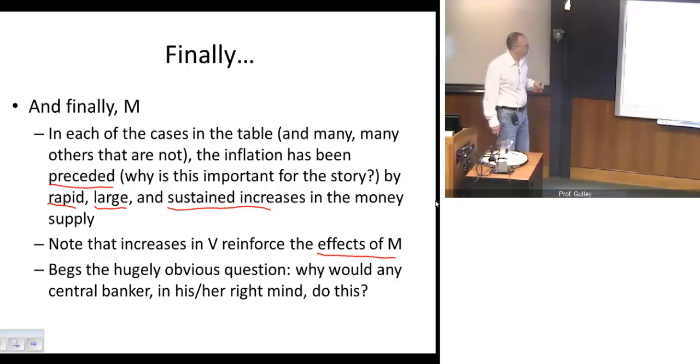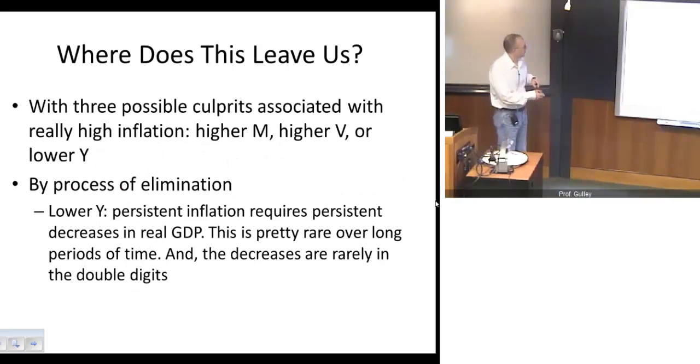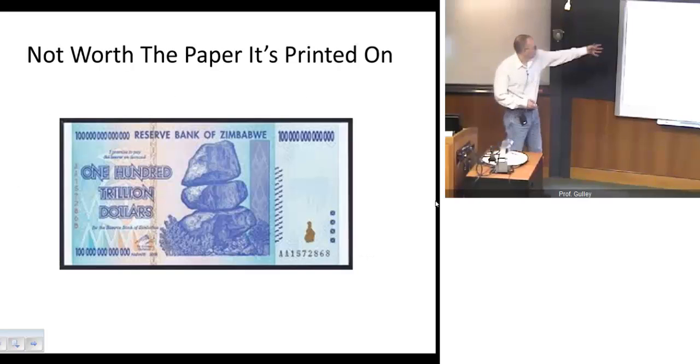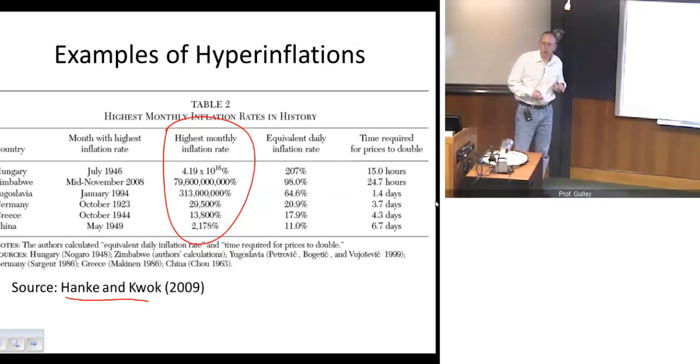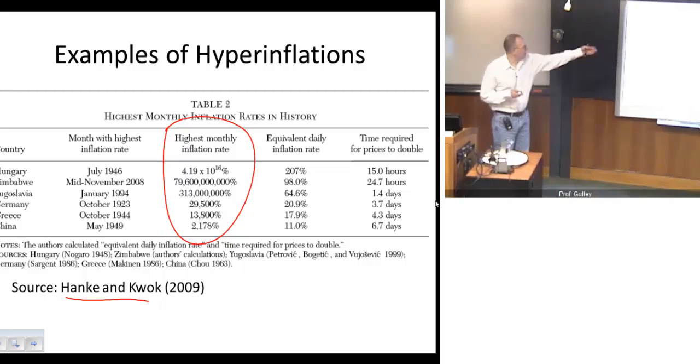And so here's a question. If we go back to our table here, why, in the name of all that is good and holy, would any central banker in their right mind ever allow the money supply to grow at rates that generated inflation rates like that? Or anything even close to that? Well, that's a story for another video. And it turns out that there are reasons sometimes why central banks end up doing that. Thank you very much.